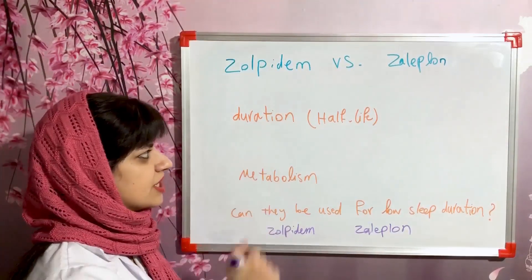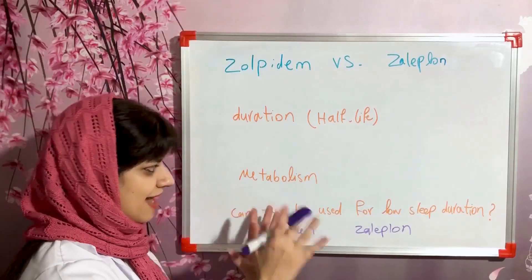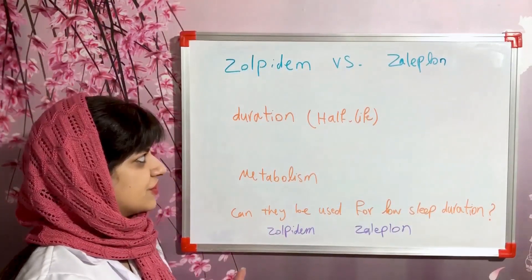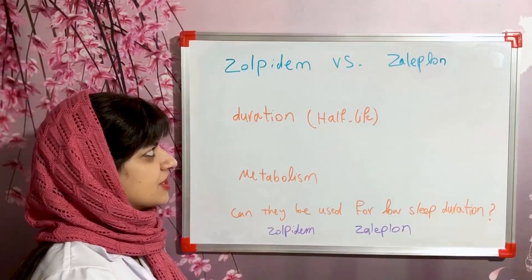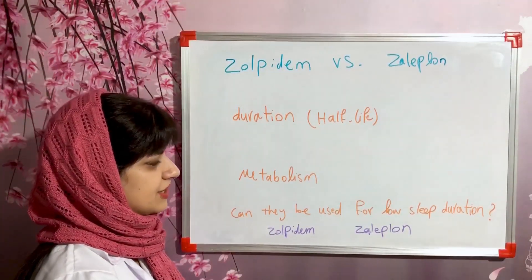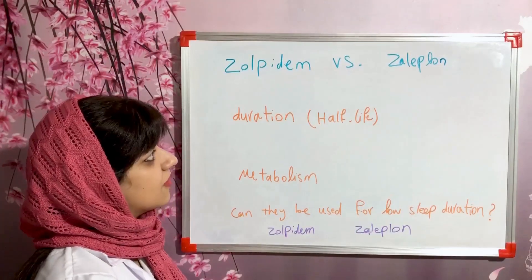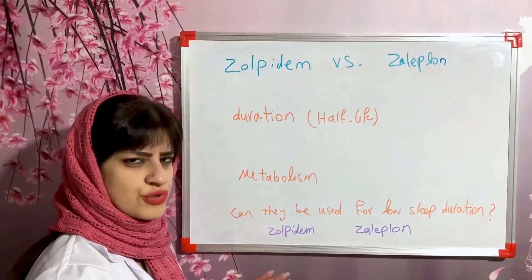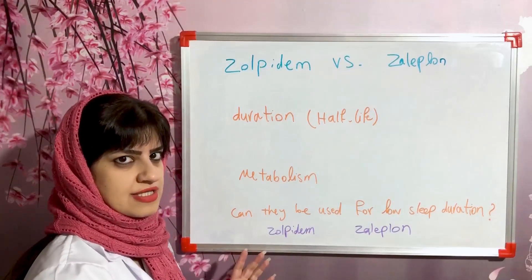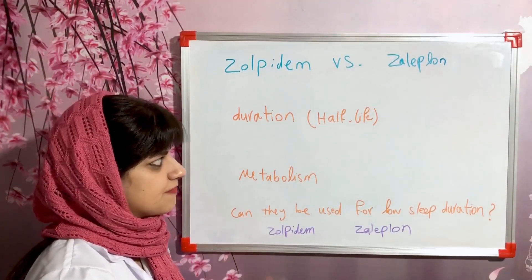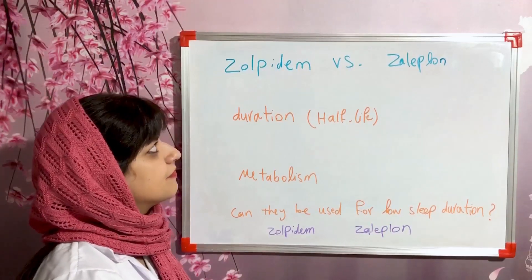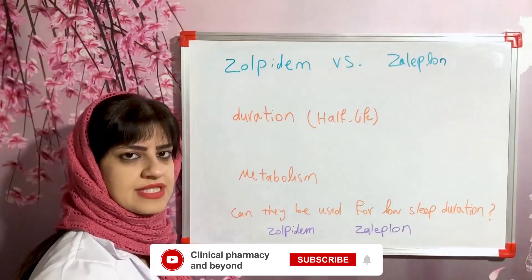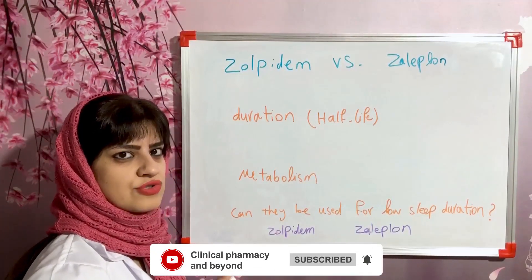Let's compare these two medications regarding their duration of action — specifically their half-life, their metabolism, and their indications. The half-life of zopiclone is around one hour, and the half-life of zolpidem is approximately two hours, making zolpidem's half-life roughly twice that of zopiclone.